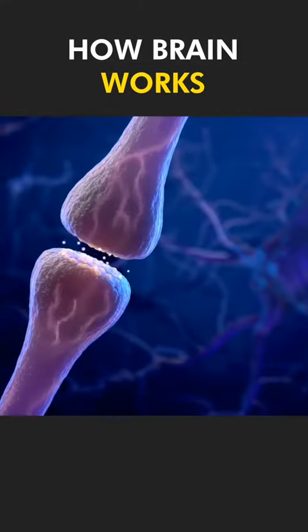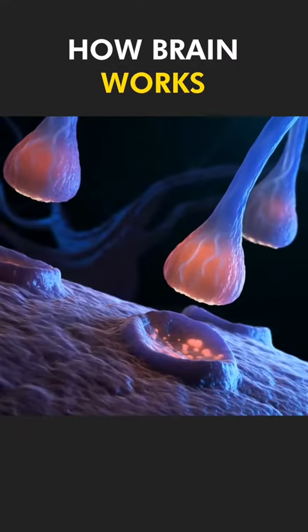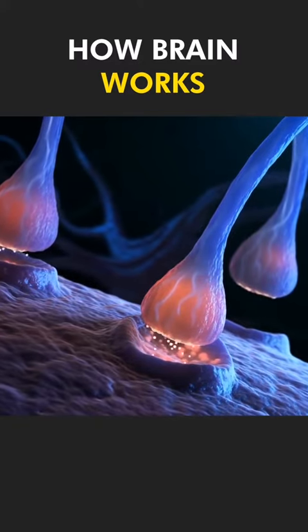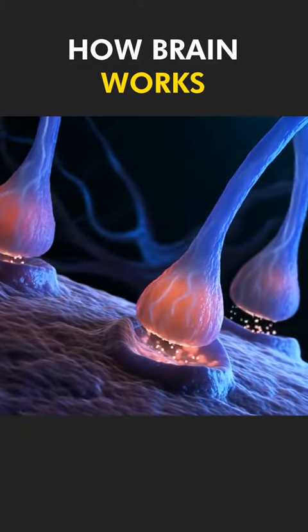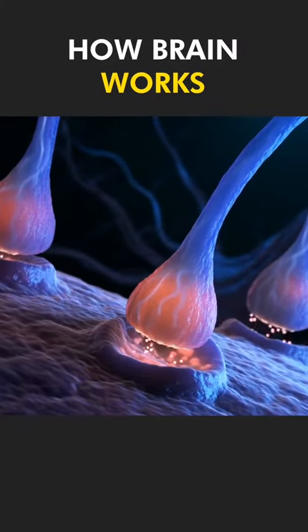The neuron then sends the signal to the next neuron using special chemicals. These chemicals jump across a tiny gap between the neurons, called a synapse. This process happens billions of times every second, creating a network of messages in your brain.